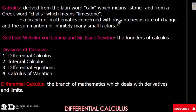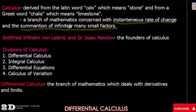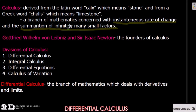In the definition of calculus, we have two key terms: the instantaneous rate of change, and the summation of infinitely small factors. These two are the essence of calculus. We try to find the rate of change instantaneously of a certain function or phenomenon, and we also try to get the summation of those changes. Each of these is tackled by a different division of calculus.